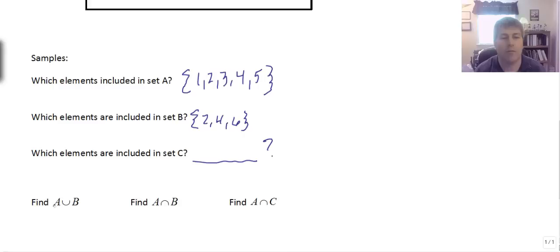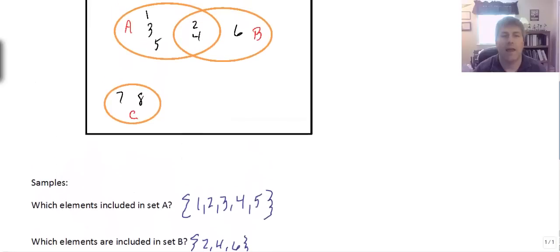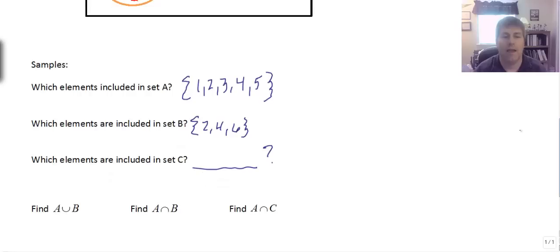You'll see questions that will say find A union B. So we want the union of sets A and B. So everything must be represented. If it's in set A we have to include it. If it's in set B we have to include it.